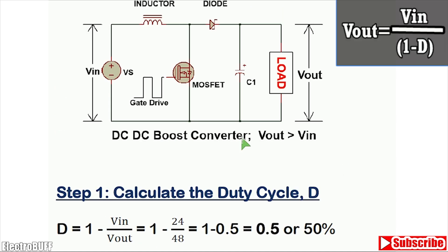A simple boost converter circuit looks as shown. You have your V input, an inductor, a fast diode, a switch — in this case a MOSFET — an output capacitor for filtering, and a load.